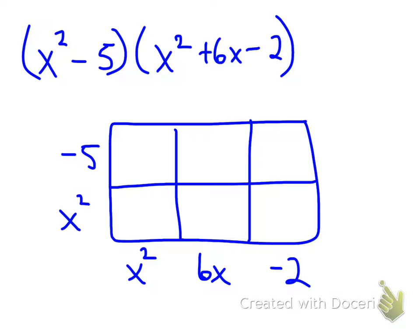The reason why I wanted to go over this example is because now I'm using x squared times x squared. So remember, x squared represents two x's being multiplied together. And when I multiply it to another x squared, that gives me a total of x to the fourth.